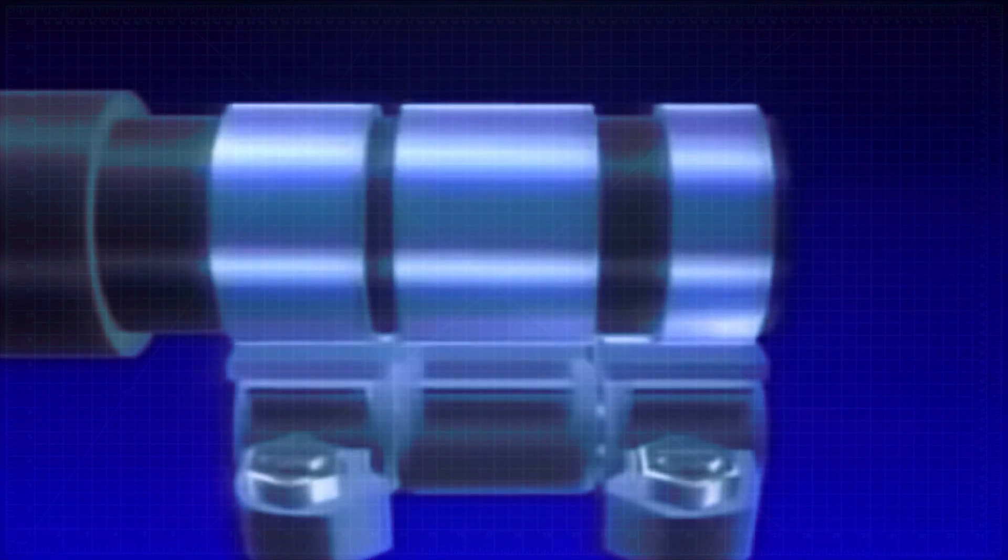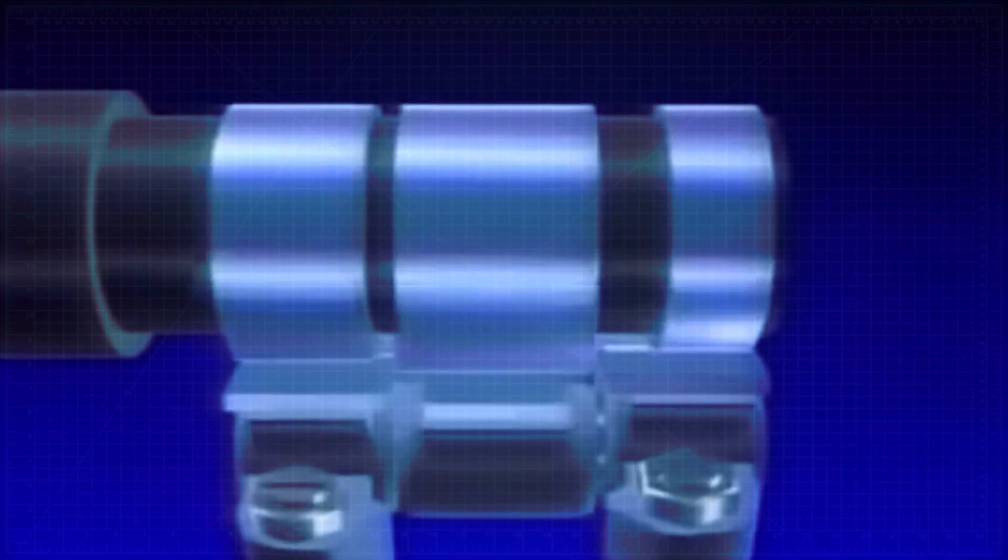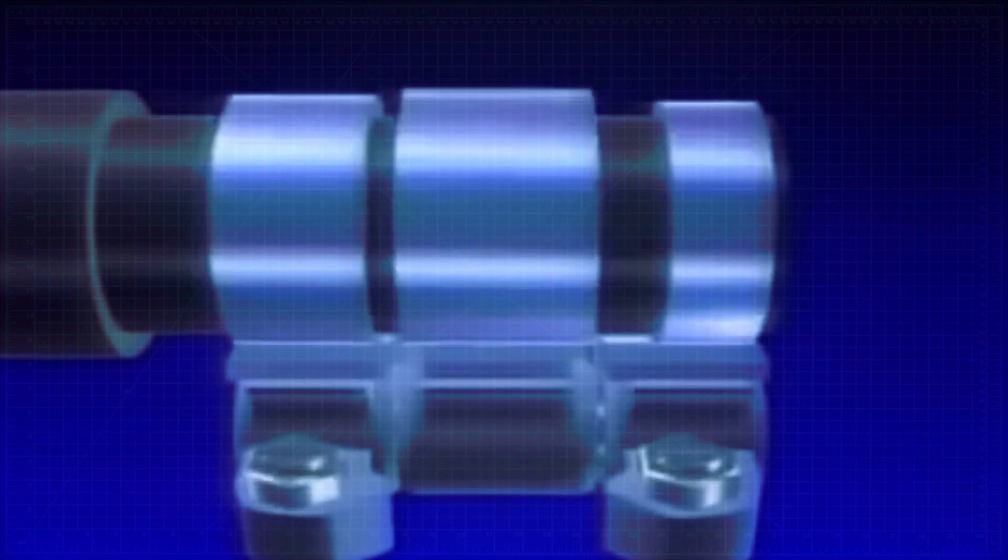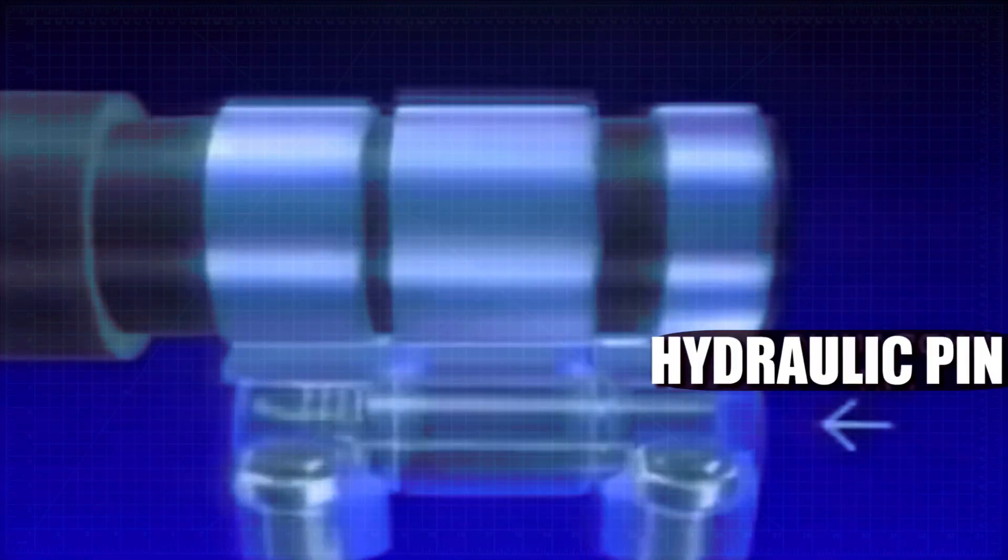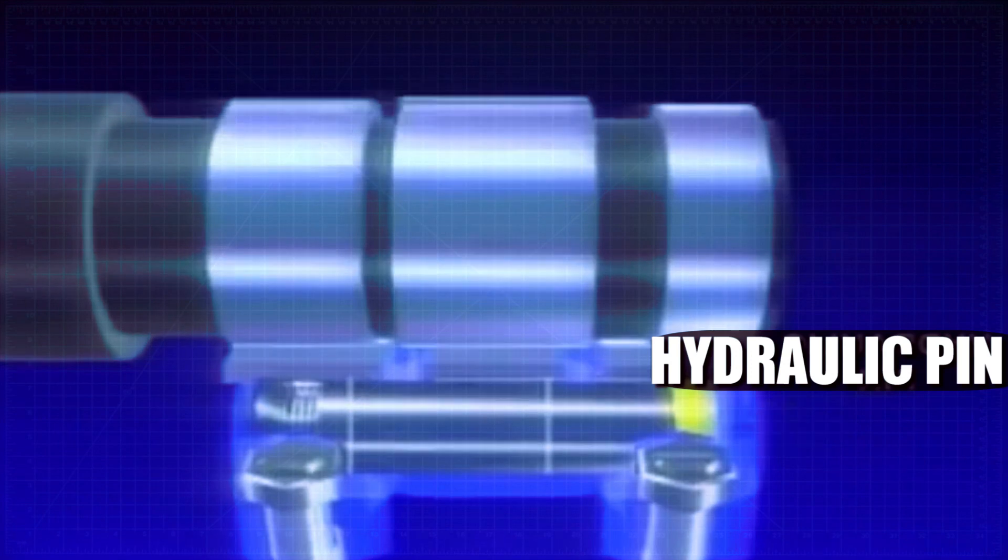When the engine revs increase to a predetermined level and certain conditions are met, a series of small hydraulic pins inside some of the rocker arms are forced to move across and lock into the arms next to them. Effectively, this action locks all three rocker arms together so they all move as one large arm.